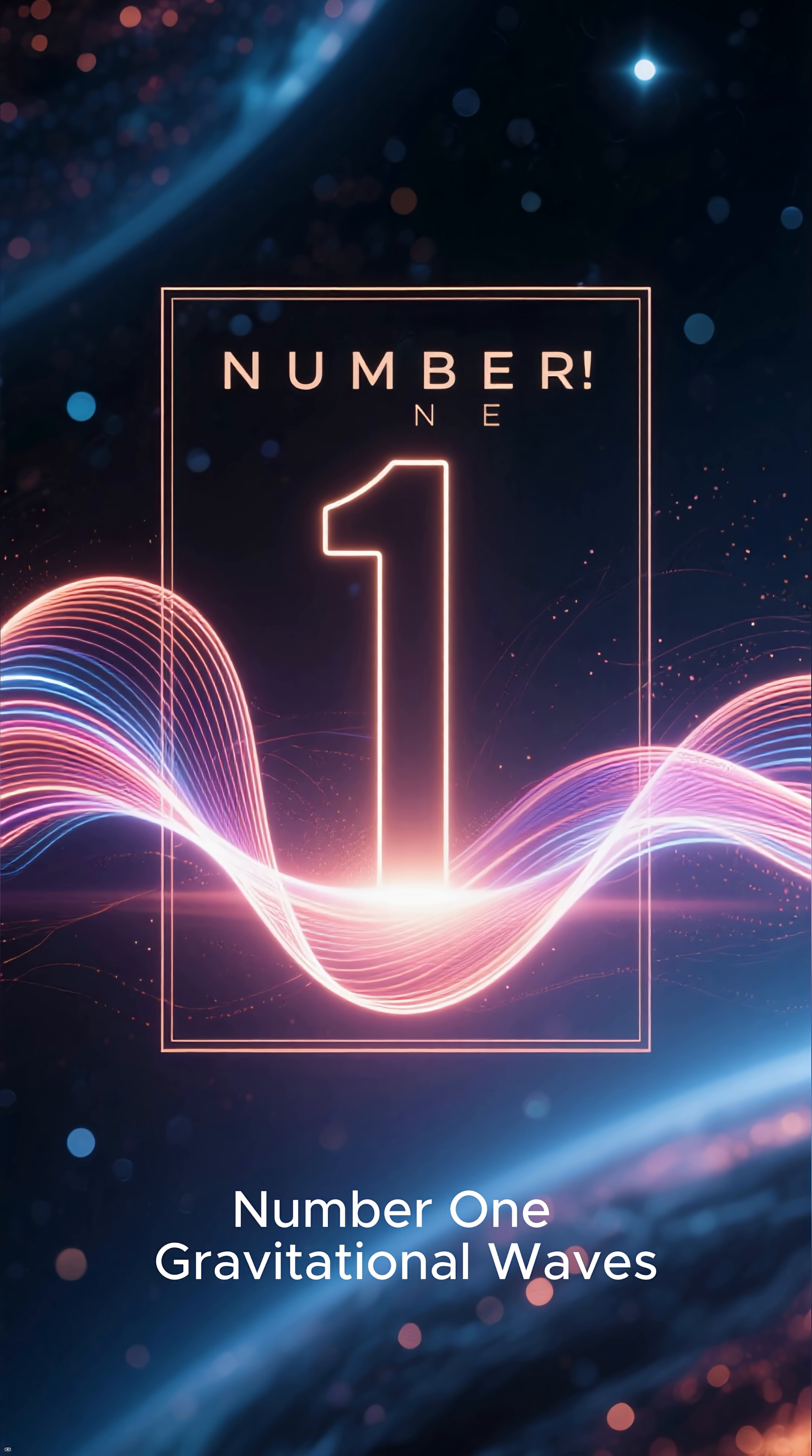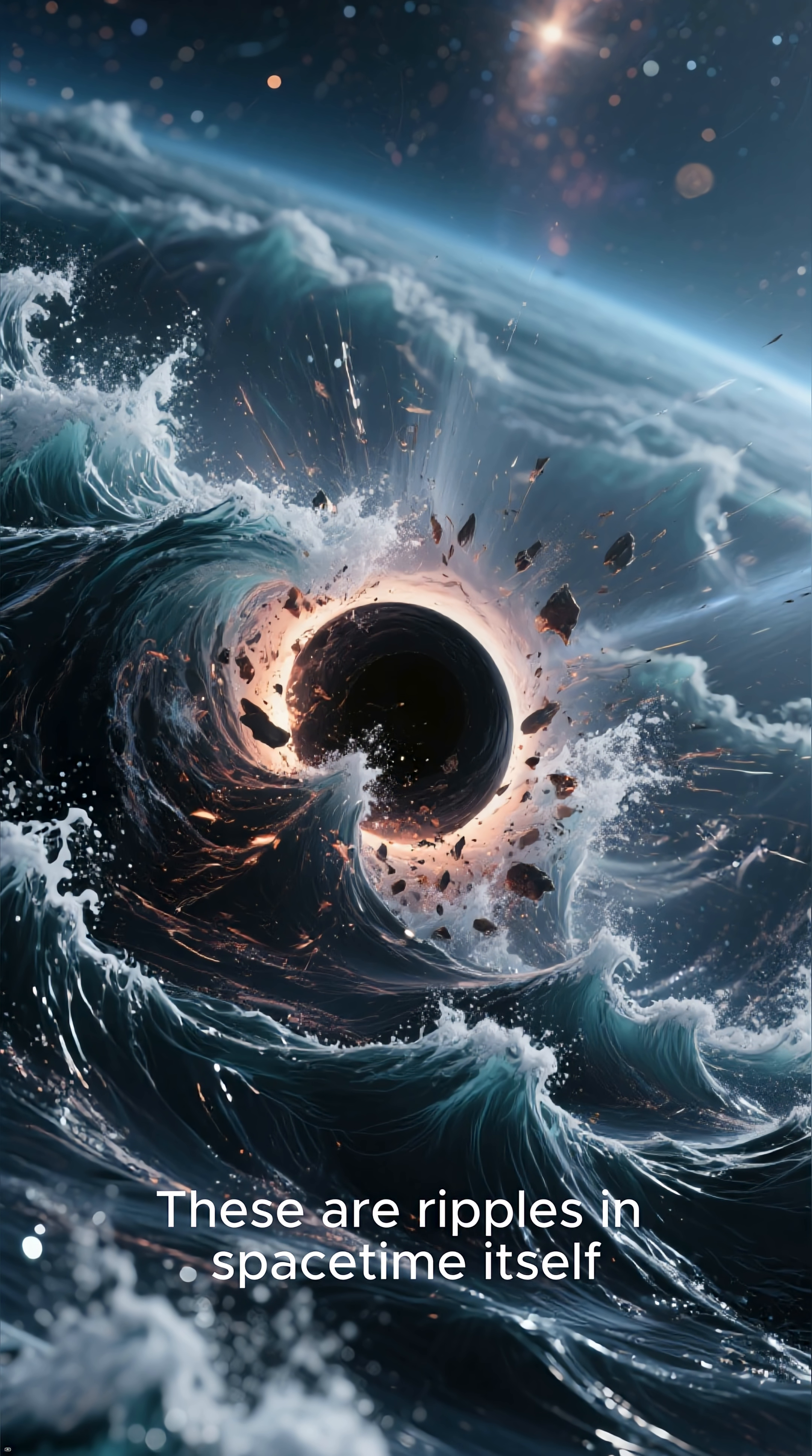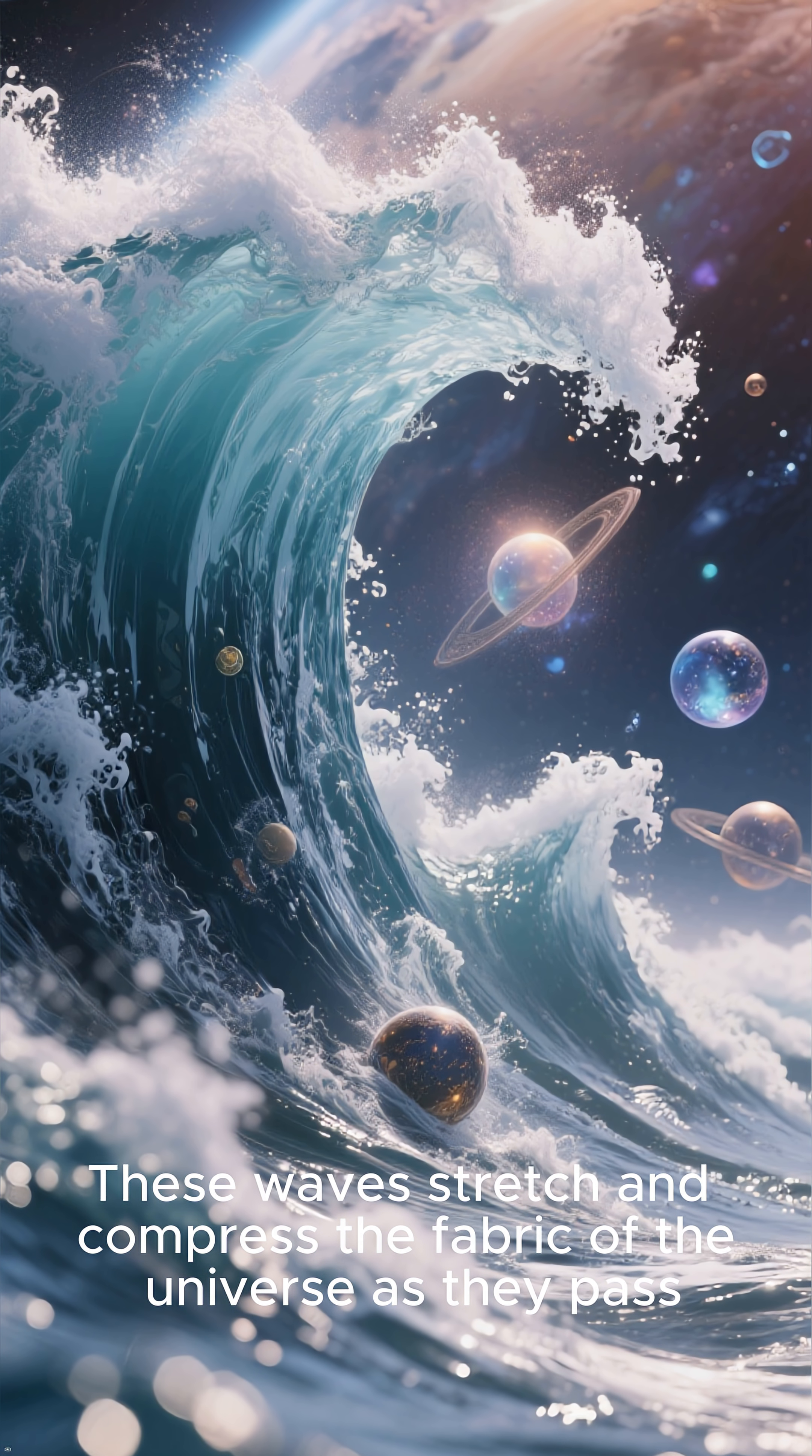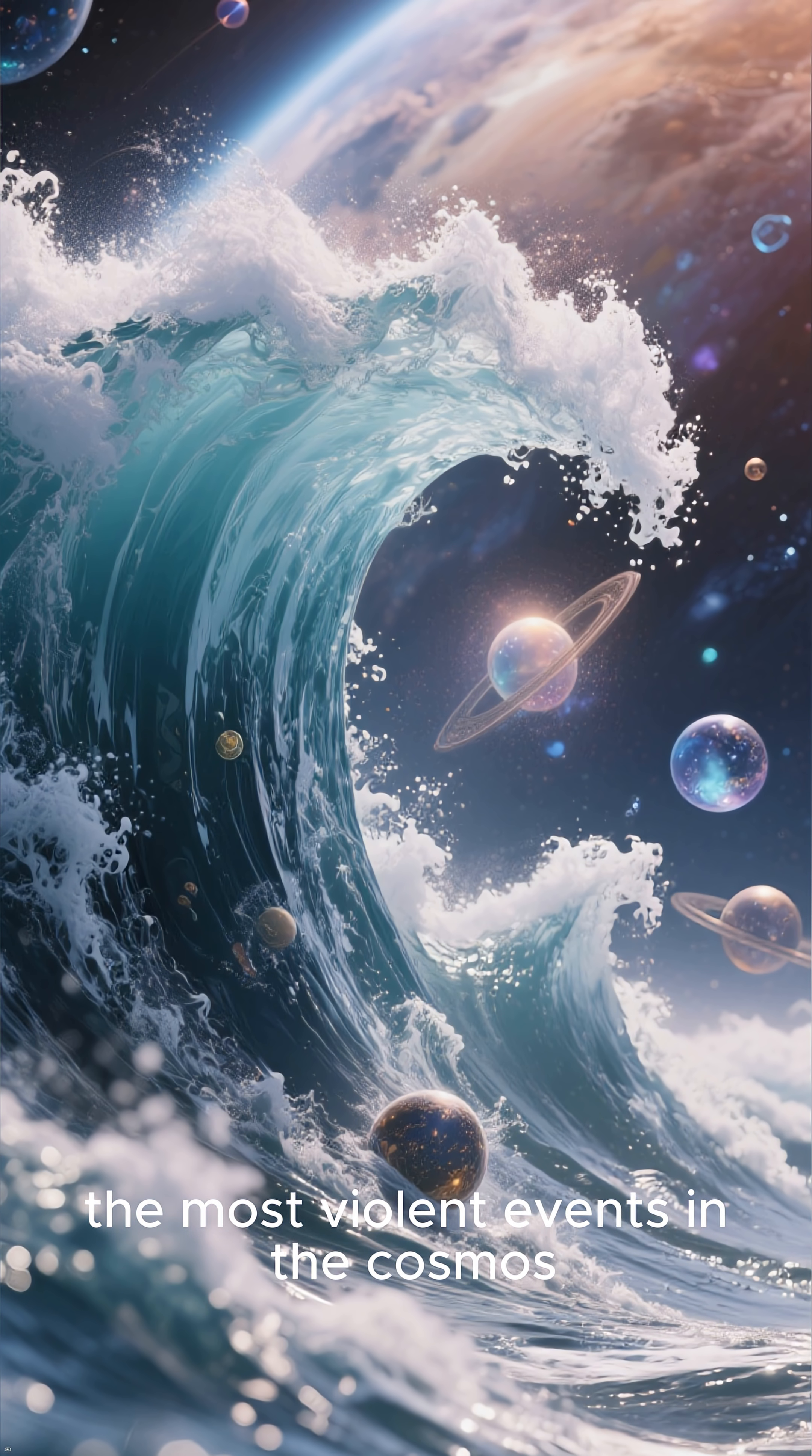Number 1. Gravitational Waves. Finally, the most dynamic and profound warping of space-time: gravitational waves. These are ripples in space-time itself, created by the acceleration of massive objects, like merging black holes. These waves stretch and compress the fabric of the universe as they pass. A direct and measurable confirmation of Einstein's theory, and a new way to hear the most violent events in the cosmos.